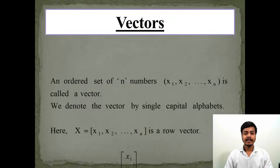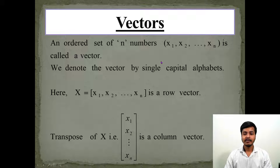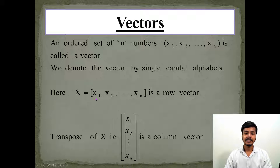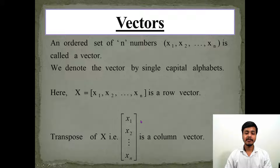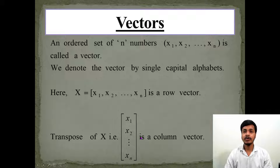A vector is an ordered set of n numbers x1, x2, ..., xn, and we denote the vector by a single capital alphabet. Here X equals (x1, x2, ..., xn) is a row vector, or the transpose of this is a column vector. In the examples we are going to learn in this video, you can take the vector as a row vector or as a column vector — it depends on your convenience.